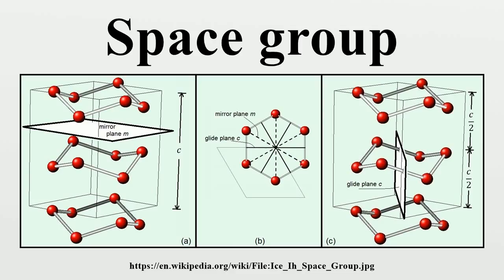In three dimensions, there are 219 distinct types, or 230 if chiral copies are considered distinct.